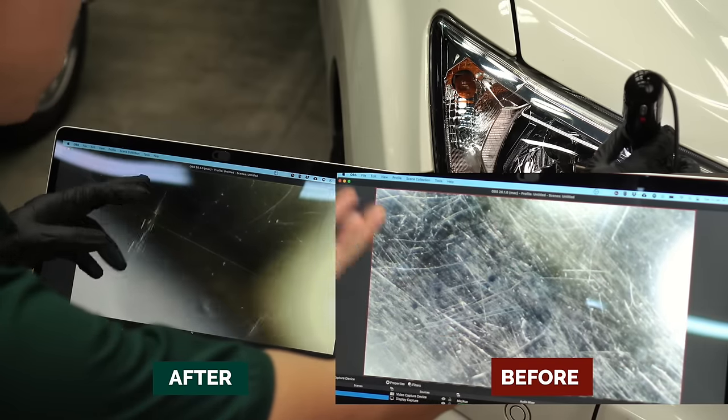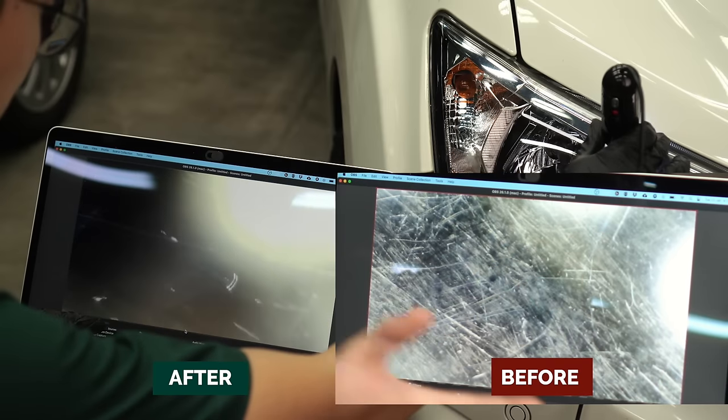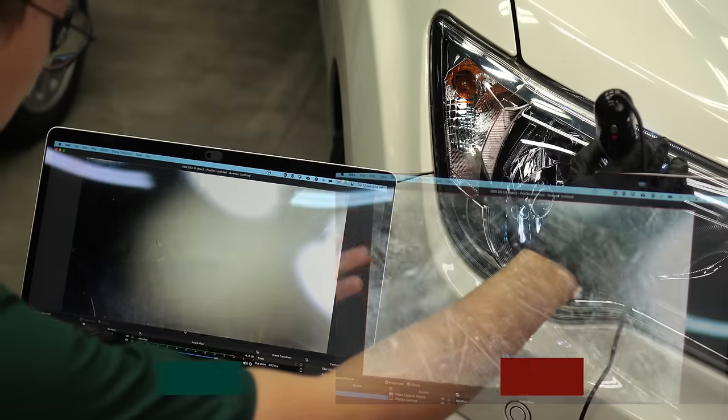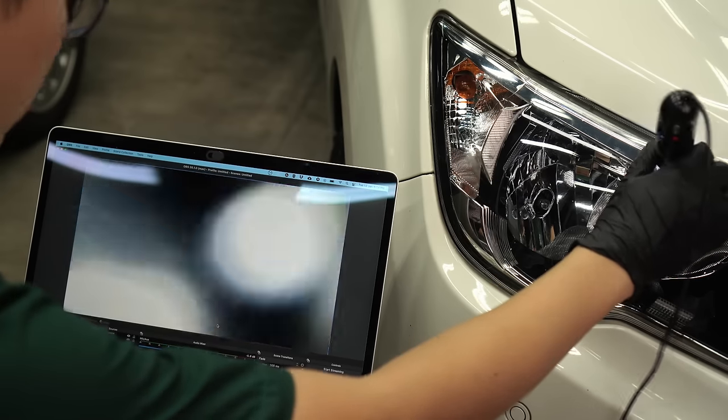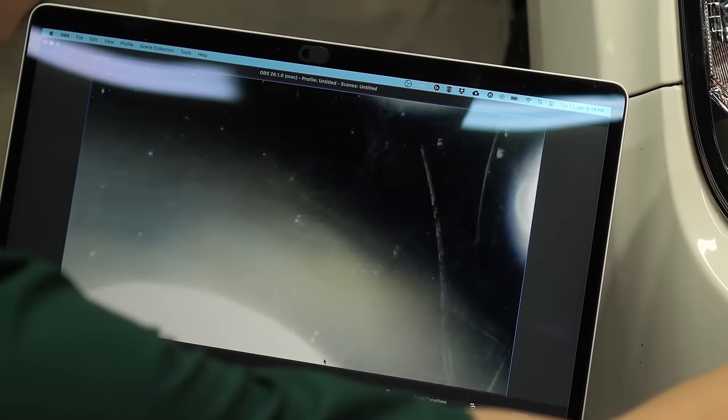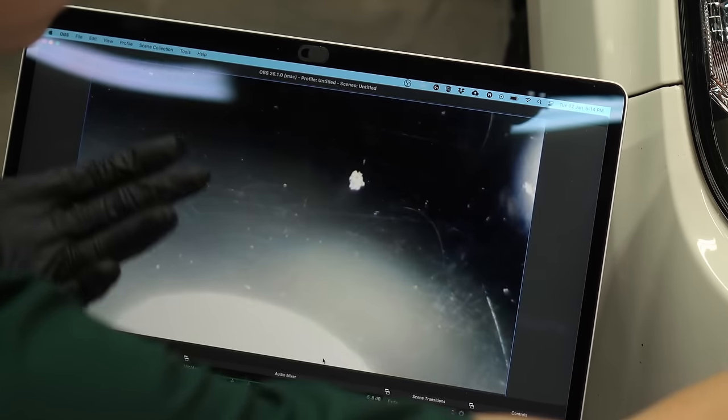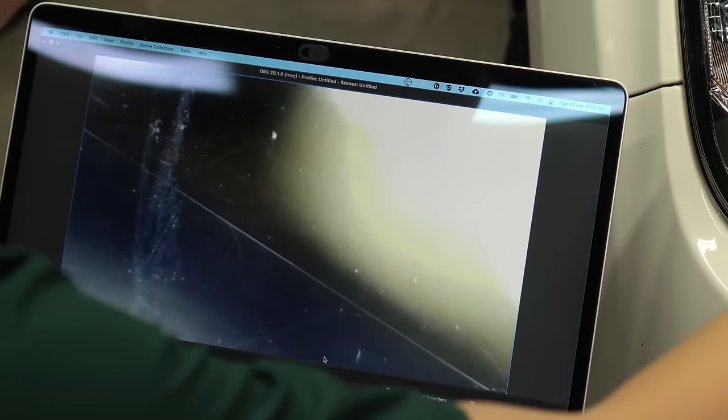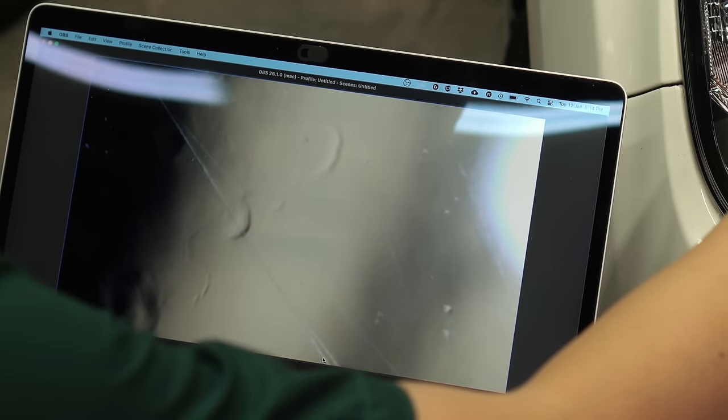As you can see there are still scratches. This is obviously pretty deep and it has to be sanded out. You can probably try knocking it out more by using probably a wool pad on a rotary polisher, but I think you probably need to knock it down with a sandpaper.